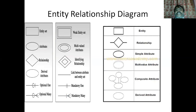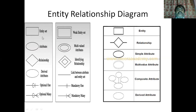Moving on to the Entity Relationship Diagram model, or ERD model. It is basically a high-order representation of the data model which tries to represent the entire system, its functioning, and its features through notation. The entities are represented by rectangular boxes; the features of an entity set — for example, if the entity set is 'student,' one feature such as roll number — are represented by oval shapes. The relationship among entity sets is represented by a diamond-shaped box. Derived attributes, which don't have a directly available value but are derived from other attributes, are also a part of this notation.